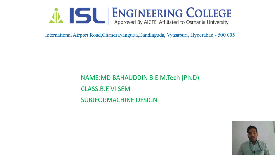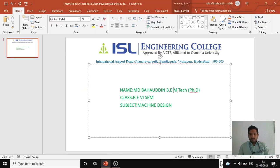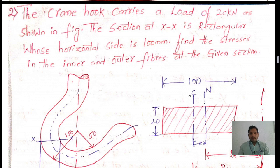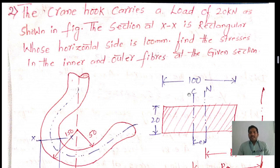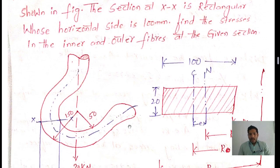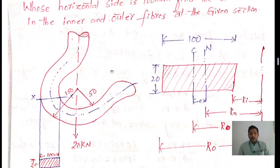The crane hook carries a load of 20 kilonewtons as shown in the figure. The section at X-X is a rectangle whose horizontal side is 100 mm. We need to find the stresses in the inner and outer fiber at the given section. The crane hook is mainly used to lift heavy objects.